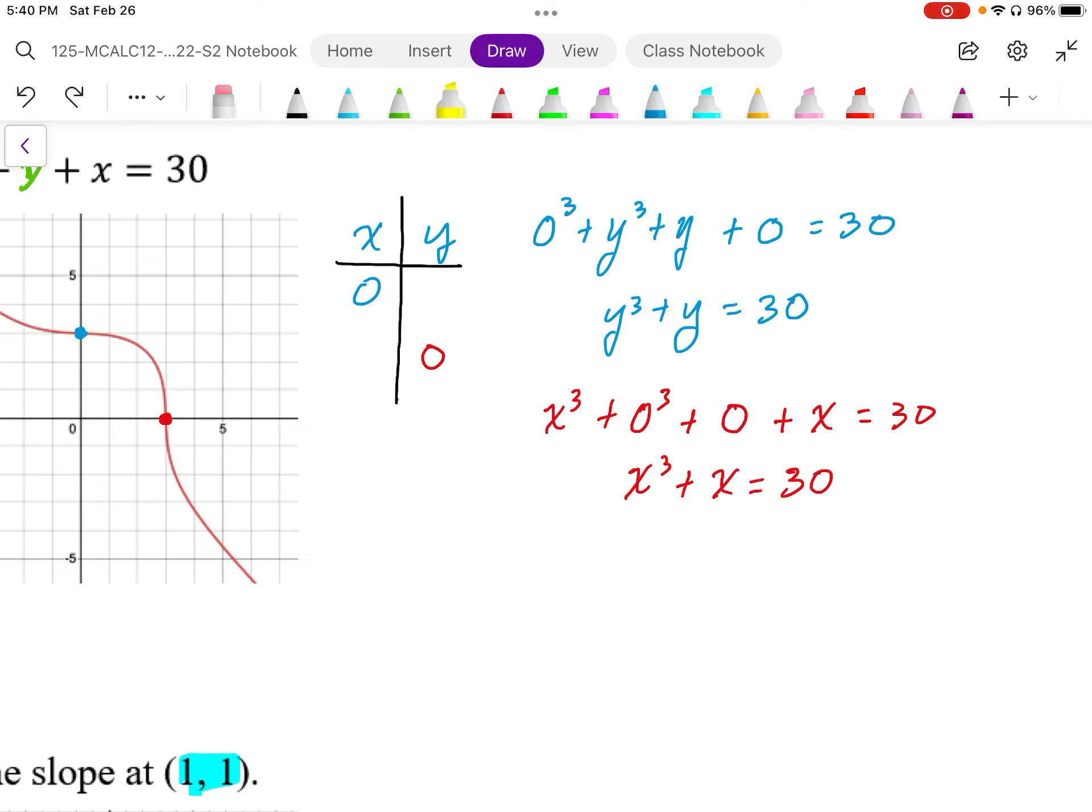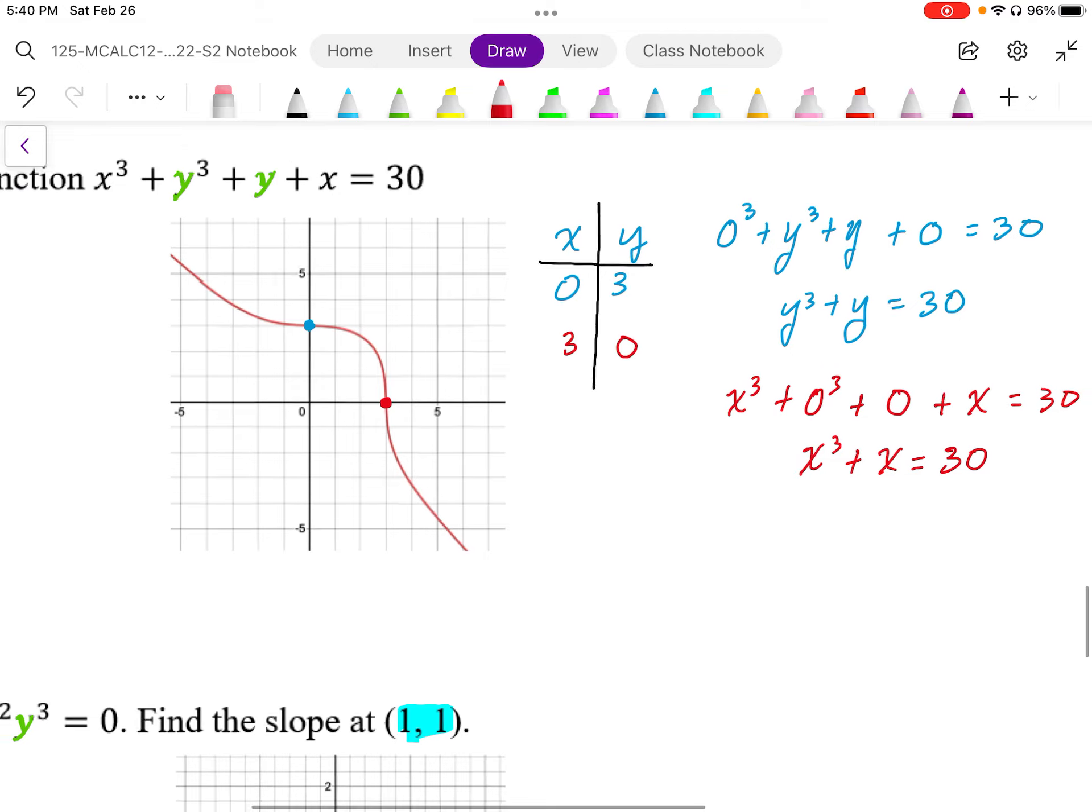So our y-intercept is at 3. And when we do the same thing for y is 0, we end up with the same equation, so we're going to get x is equal to 3. So those are our x and y-intercepts.